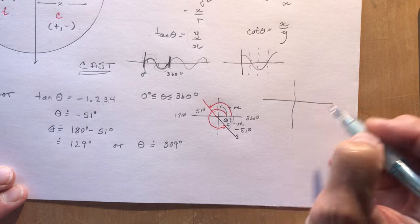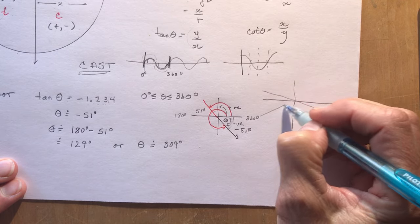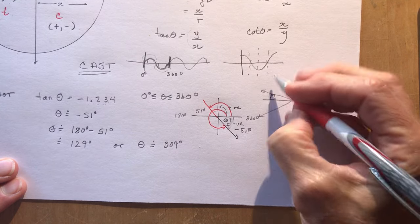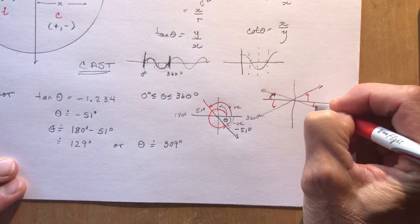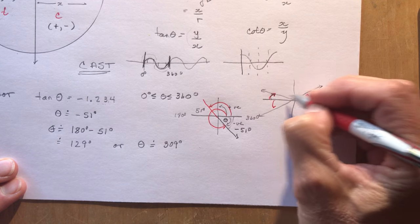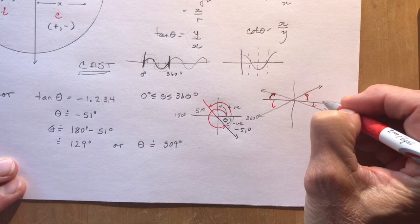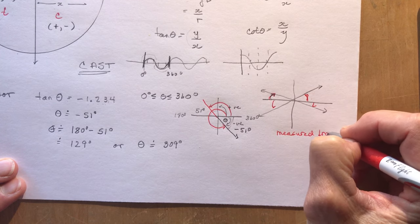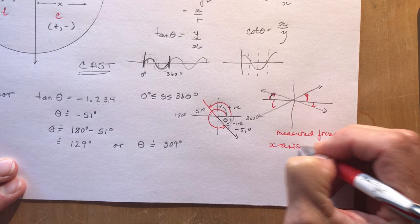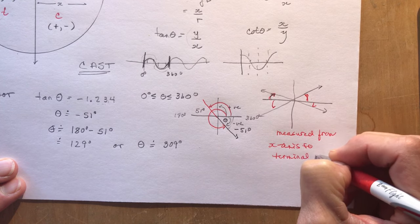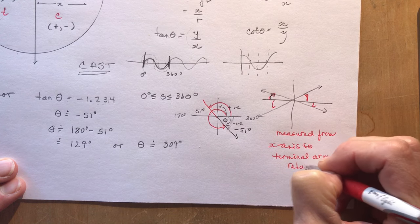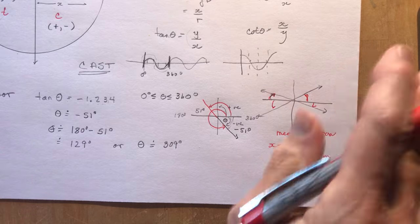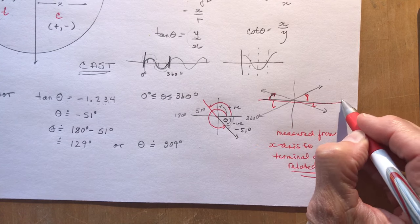I often show students this little graph: when you have an angle, these terminal arms have a distance from the x-axis — think of it like little bird wings flapping up and down. These are your related acute angles, measured from the x-axis to the terminal arm. You have to find those all the time. Remember this drawing — it's very important.